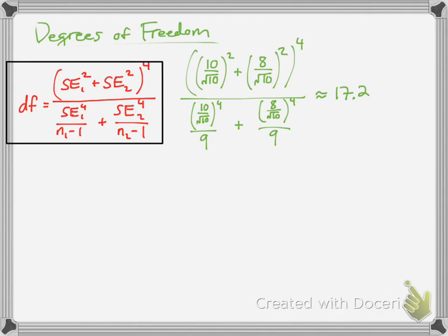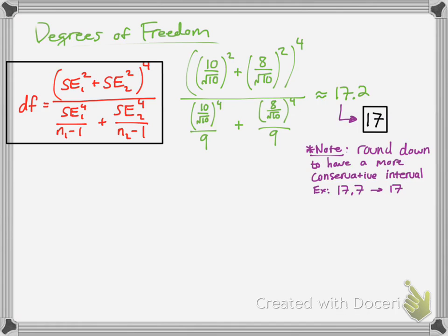Now since we're going to be using a table, degrees of freedom are in integers, so they're whole numbers. So we'll round this down to 17 degrees of freedom. Now one thing worth noting, you should generally round down to have a more conservative interval. So say we got 17.7, you still want to bring it down to 17. This is just so you're more confident and conservative with your data.